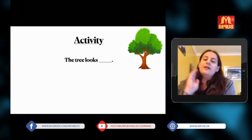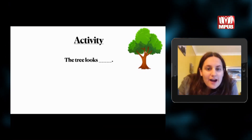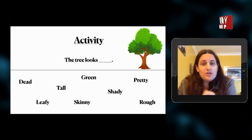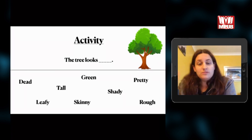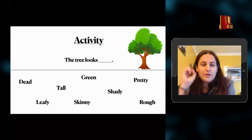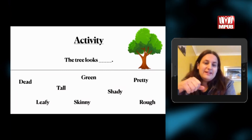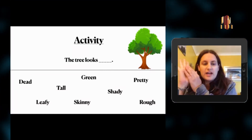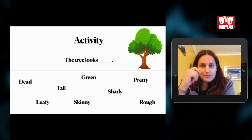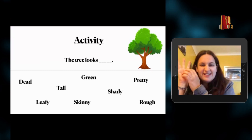Let's look at another one. Think about: 'The tree looks what?' Examples: 'The tree looks green' — you can see the green color. 'The tree looks tall' — that's the size. 'The tree looks dead' — maybe it's not alive, all brown with no leaves. 'The tree looks pretty,' 'it's skinny,' 'it's rough' — rough describes the texture, something you can touch, like the bark of the tree. Notice the adjective goes after the sense verb 'look.'